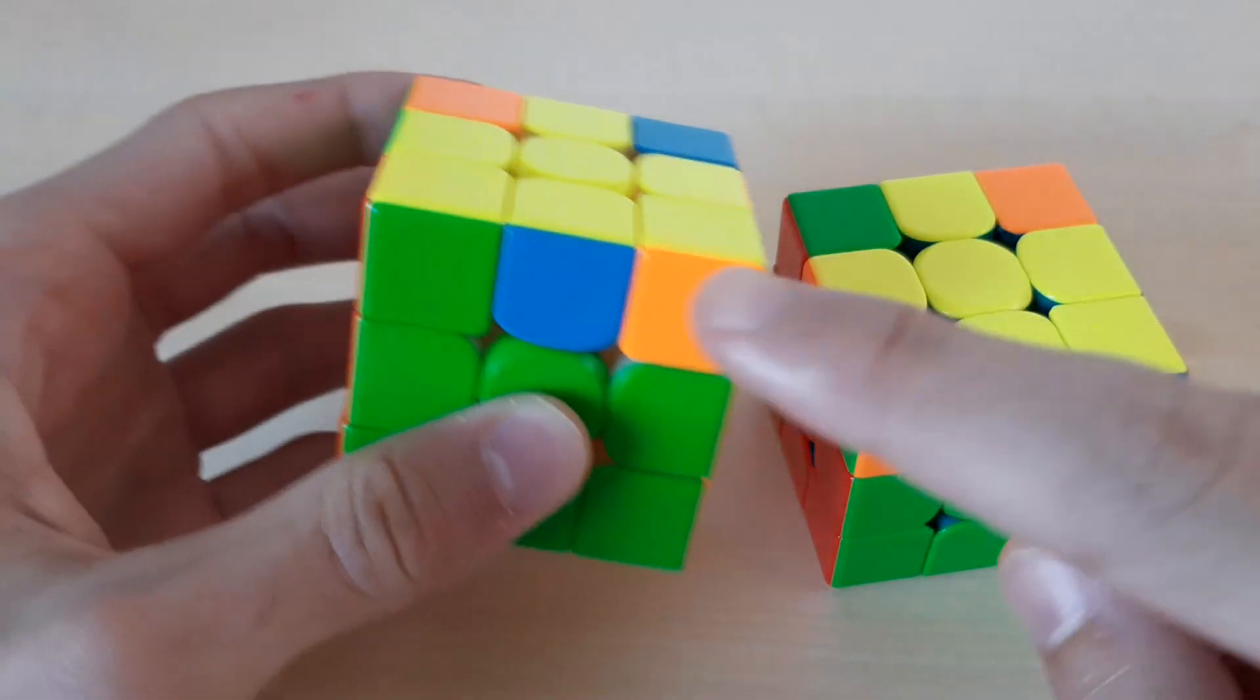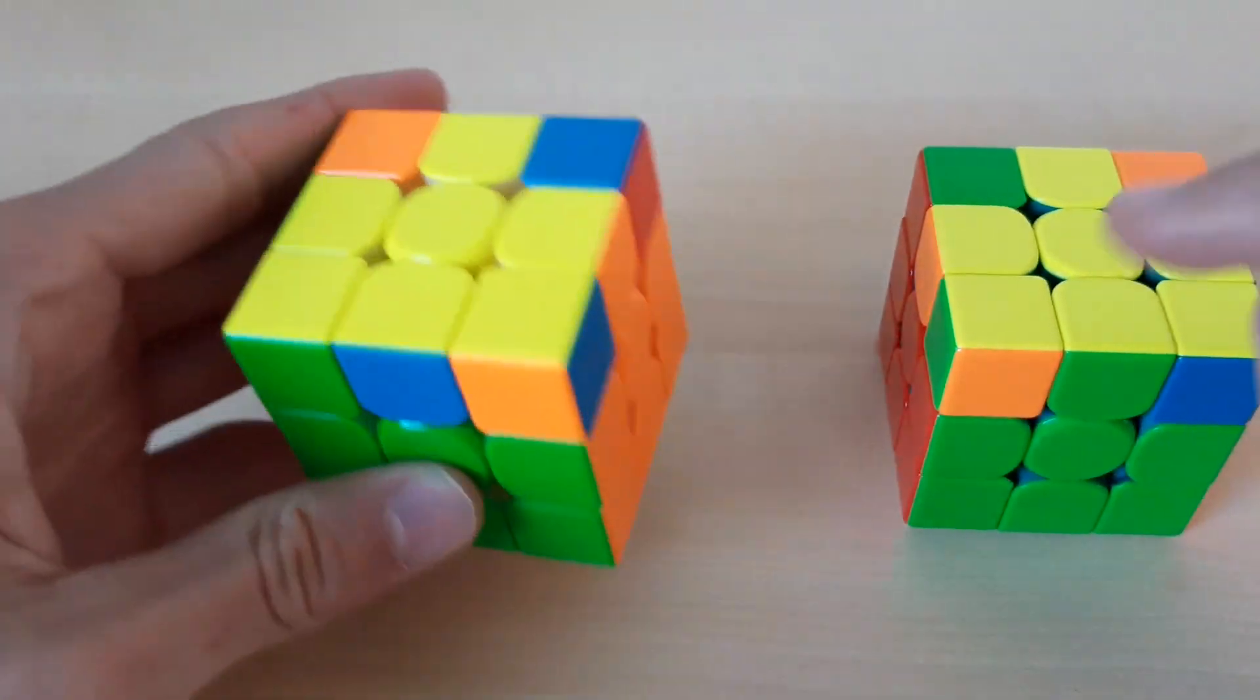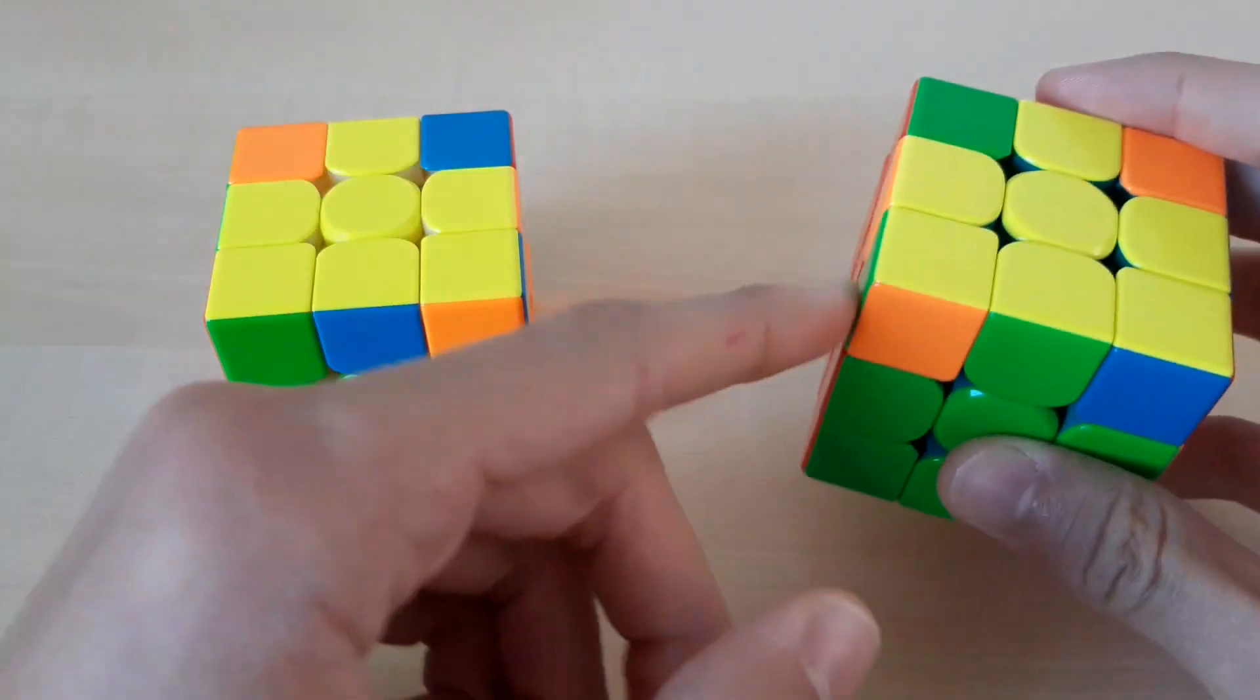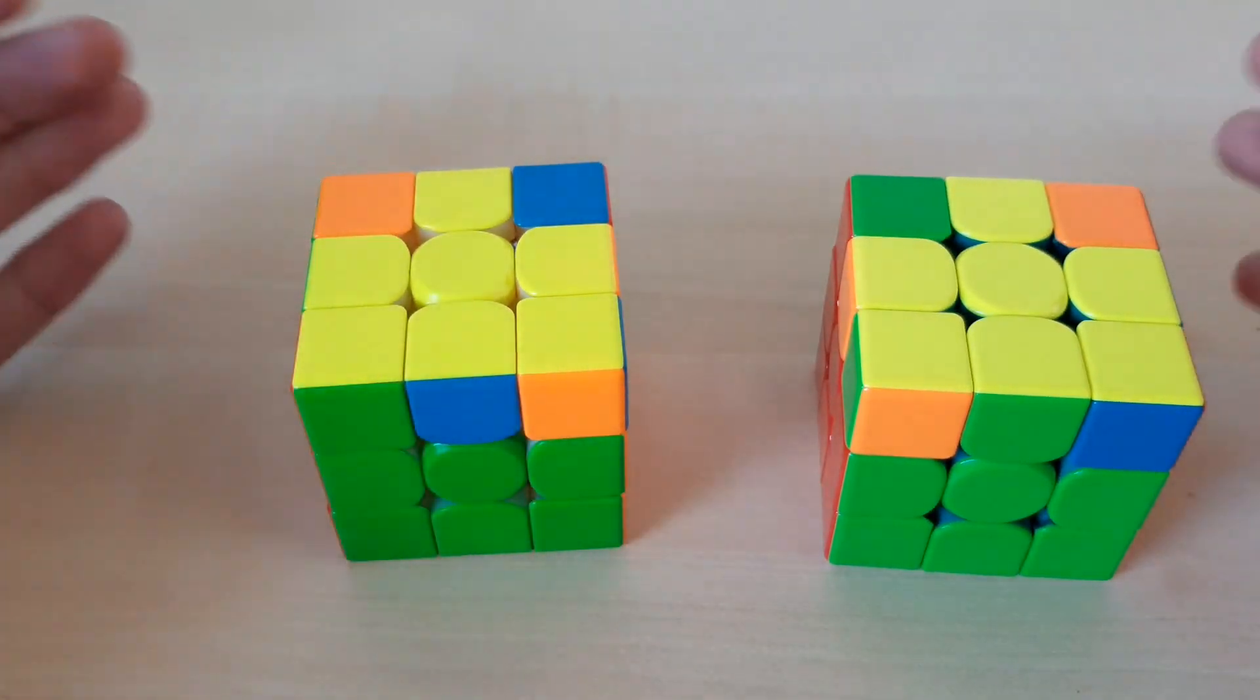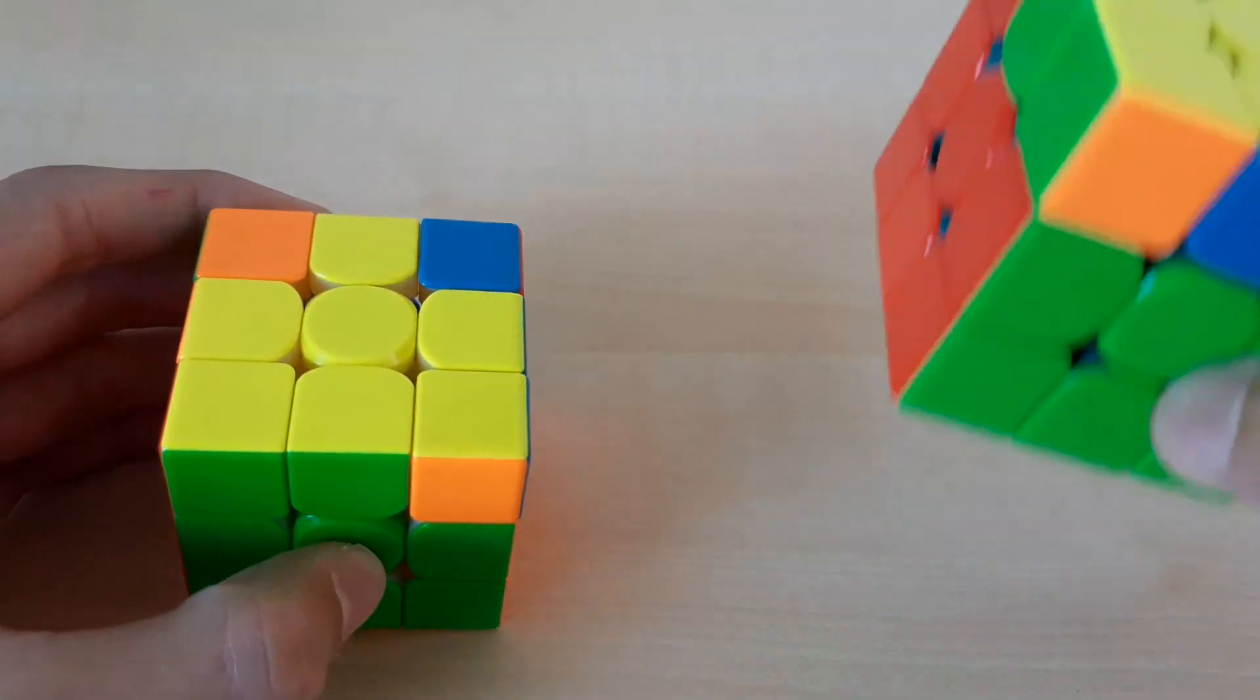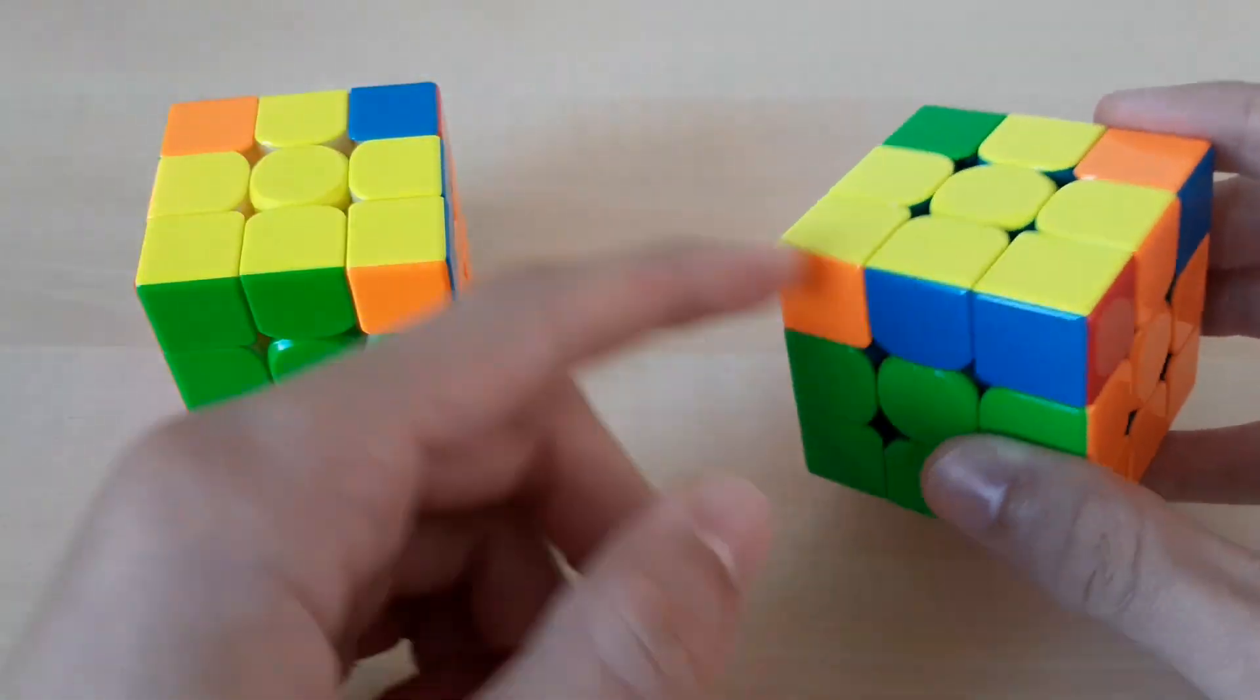So for example, these two cases, you have this big pseudoblock for both of the cases. But as you can see, for this one the block is on the right and for this one it's on the left. So you don't even need to check the exact COLL to know which case you have. Another example, here you have two bars for each of them, but for this one they are on the right side and here they are on the left side.